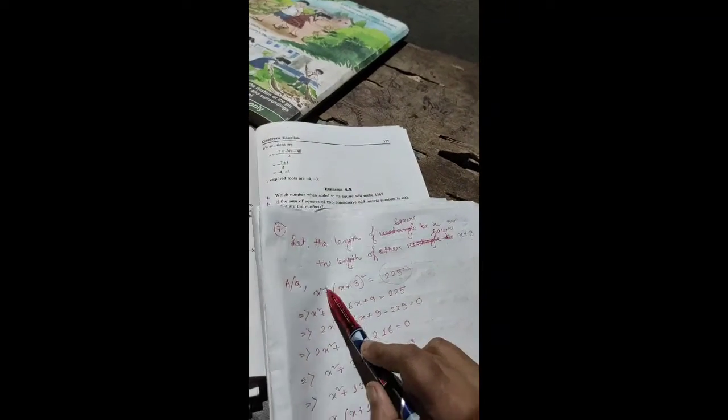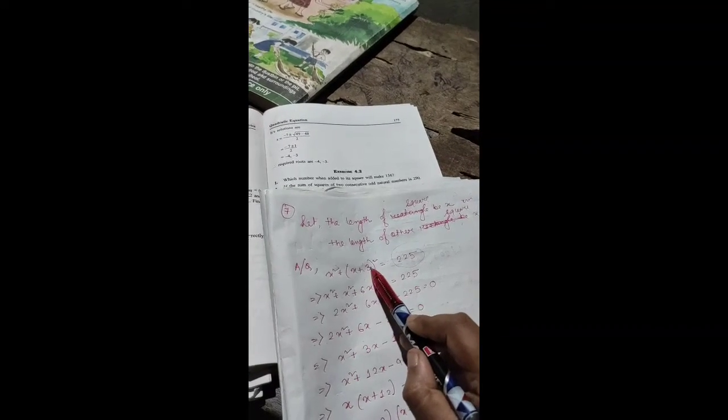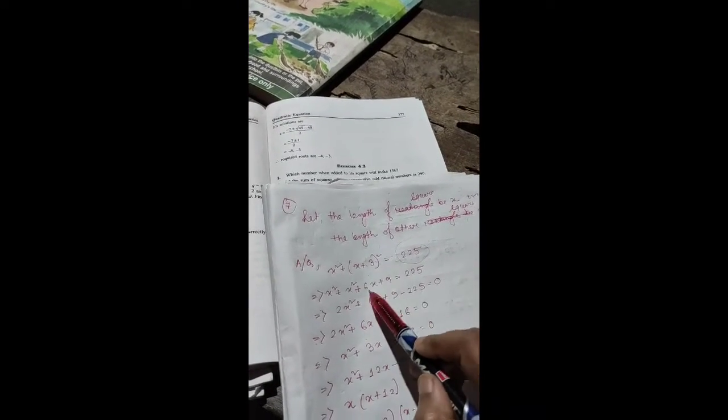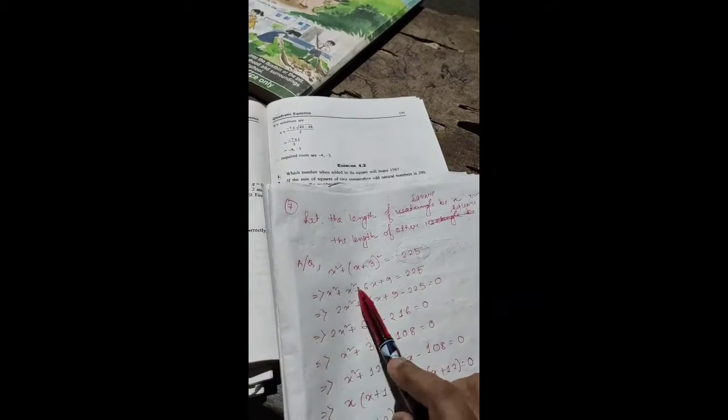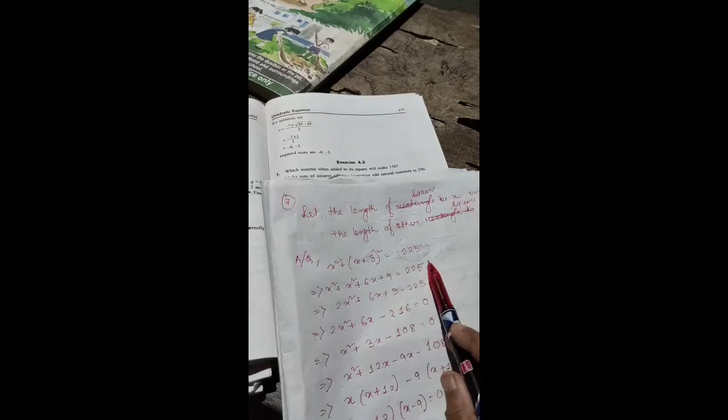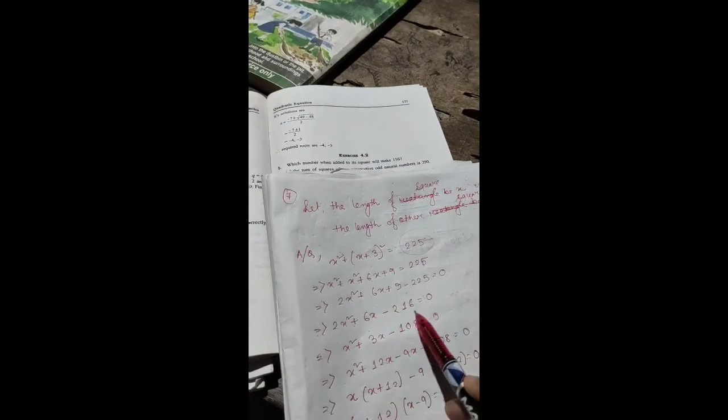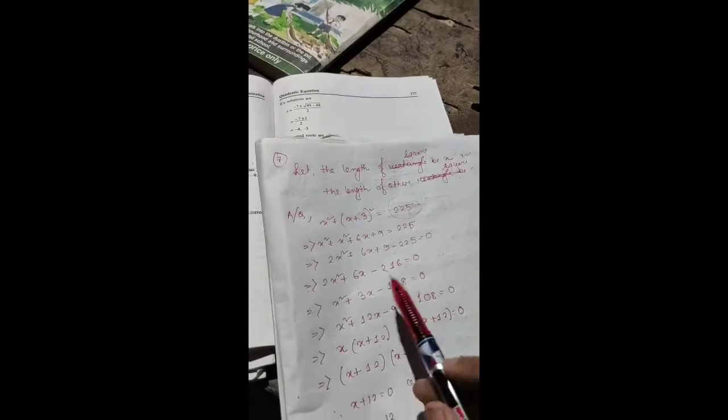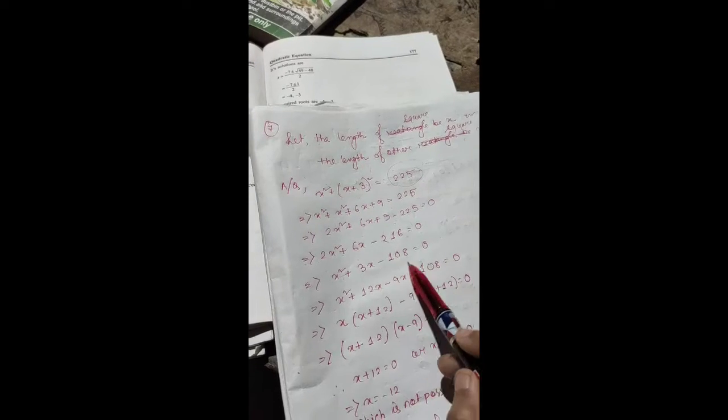That means x² using the formula (a+b)² = a² + 2ab + b². So x² + x² + 2(x)(3) + 9 = 225. Therefore 2x² + 6x + 9 = 225, so 2x² + 6x - 216 = 0. Dividing by 2: x² + 3x - 108 = 0.